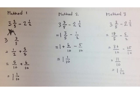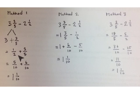Here we're going to show three ways of computing 3 and 3 fifths minus 2 and 1 half. In Method 1, think of 3 and 3 fifths as 3 plus 3 fifths. Take the whole number 3, subtract 2 and 1 half — that gives 1 half. We've done our subtraction, and what's left is 1 half, so we add that to our 3 fifths. Getting a common unit of 10: 1 half times 5 fifths is 5 tenths, and 3 fifths times 2 halves is 6 tenths. 5 tenths plus 6 tenths is 11 tenths, the same as 1 and 1 tenth.